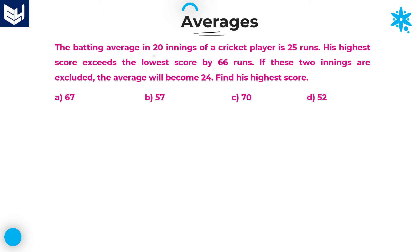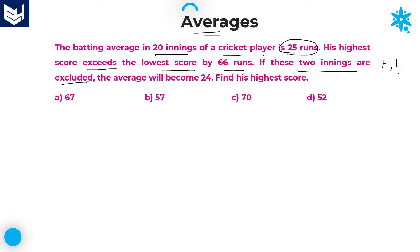The batting average in 20 innings of a cricket player is 25 runs. His highest score exceeds the lowest score by 66 runs — meaning the difference between the highest score and lowest score is 66 runs. If these two innings are excluded, then the average becomes 24.